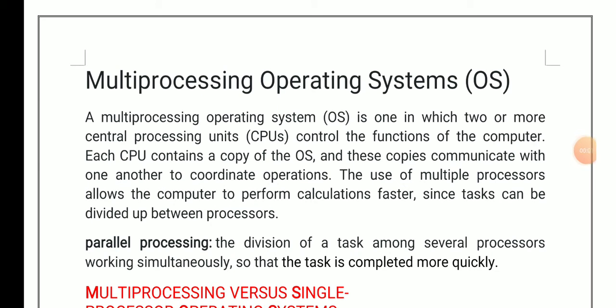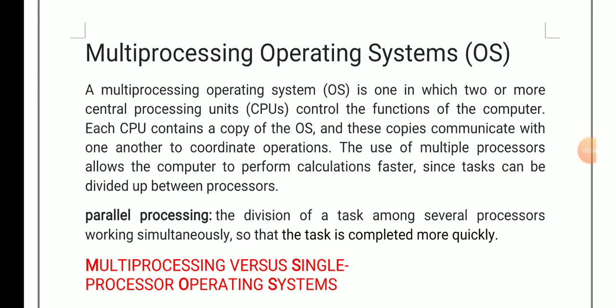Welcome to today's lecture. We are covering multi-processing operating systems. A multi-processing operating system is one where we have two or more CPUs that control the functions of a computer system. In these CPUs, we can maintain a copy of the operating system that can help them communicate with each other for performing specific operations.